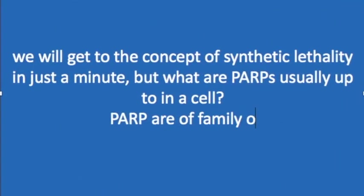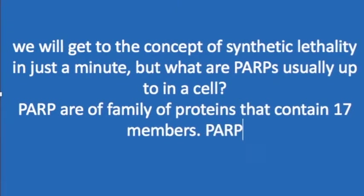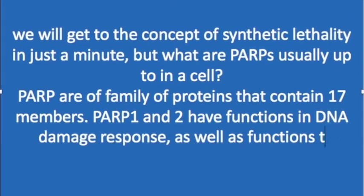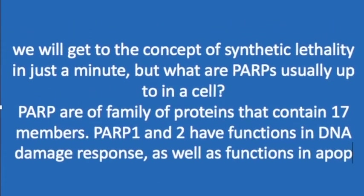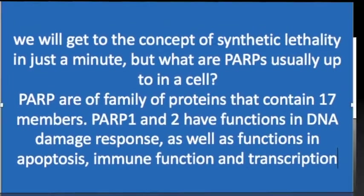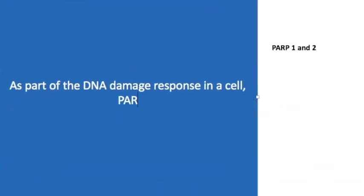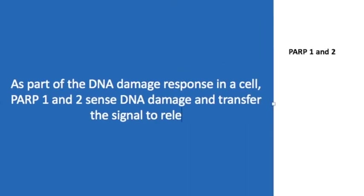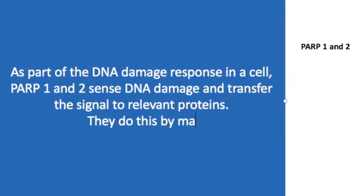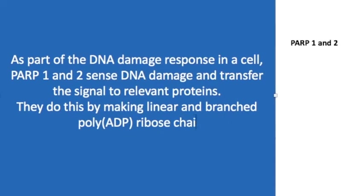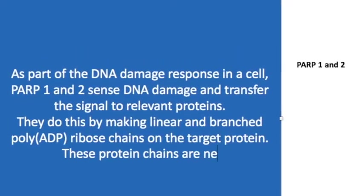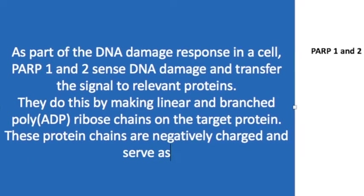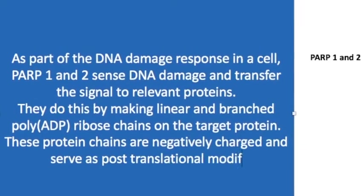PARPs are a family that contain around 17 members. PARP1 and PARP2 have functions in DNA damage response, as well as functions beyond DNA damage repair such as apoptosis, immune function, and transcription. As part of the DNA damage response, PARP1 and PARP2 sense DNA damage and transfer the signal to other proteins by making branched poly-ADP-ribose chains on the protein target. These branched chains are negatively charged and serve as post-translational modifiers.